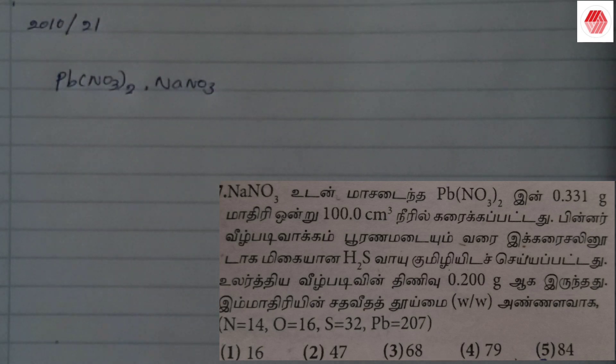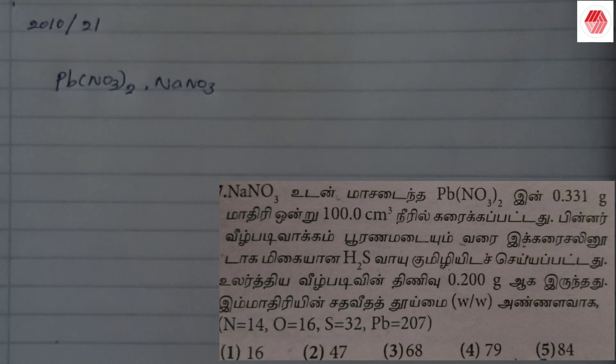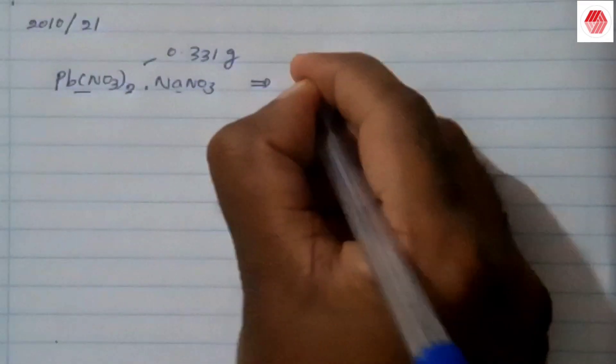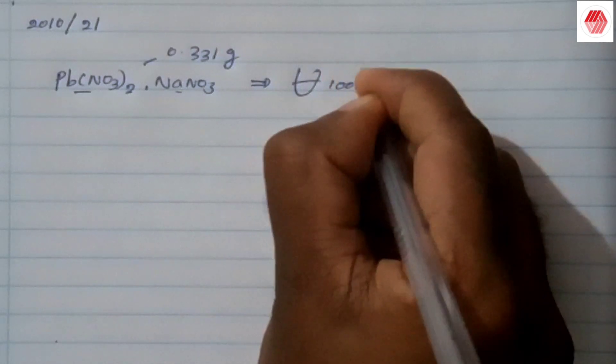This is the 21 MCG. Pb(NO₃)₂ — 333.1 grams in 100 mL of water. In the previous period, Pb(NO₃)₂ in the soil is 333.1 grams, and this is 100 mL for water.